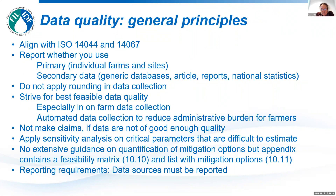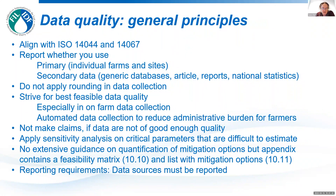Application of sensitivity analysis, especially on critical parameters — the ones that really affect your results, such as emission factors for enteric methane — is really recommended. There's no extensive guidance on quantification of mitigation options in this renewal, but we may look at it with the LCA action team later on. In the appendix, you can find a feasibility matrix to determine whether a mitigation option is feasible to implement on your farms or in your factories, and a list of mitigation options identifying what you can do to reduce your footprint. You also have to report all the data sources that you use.